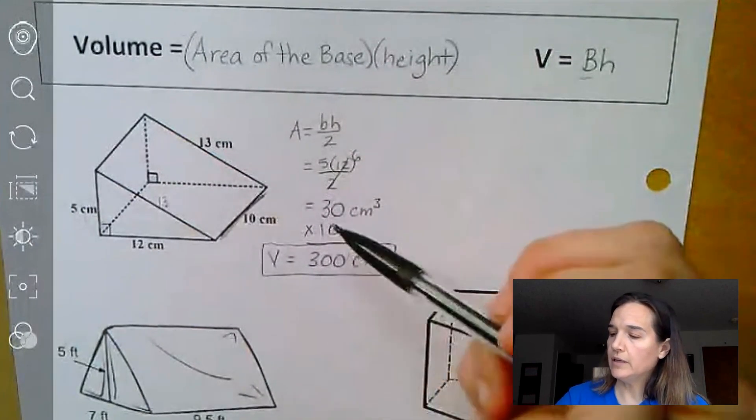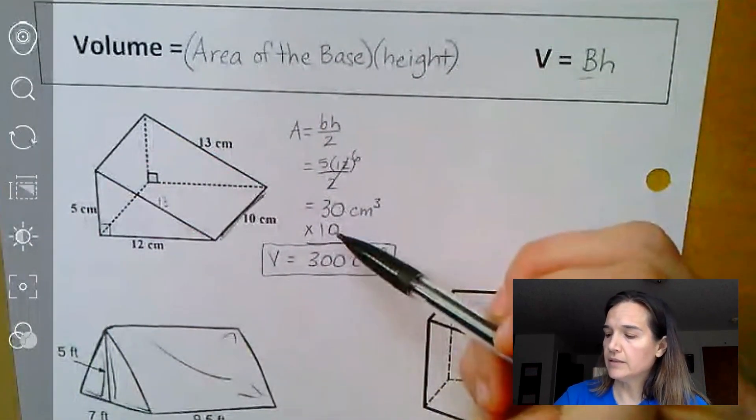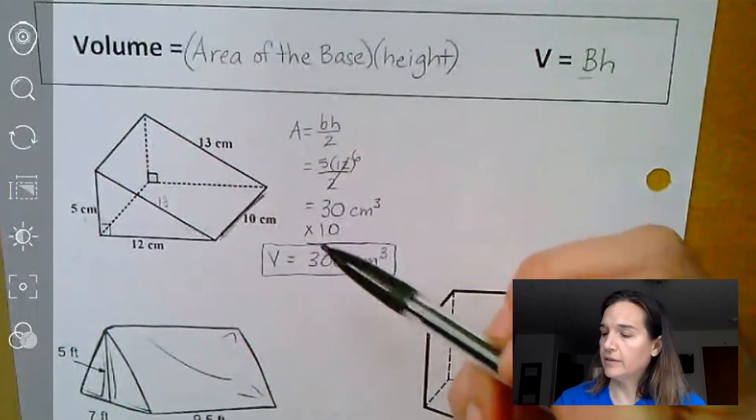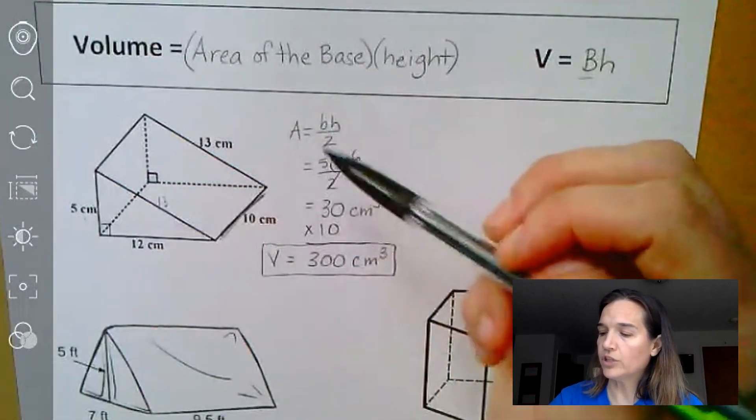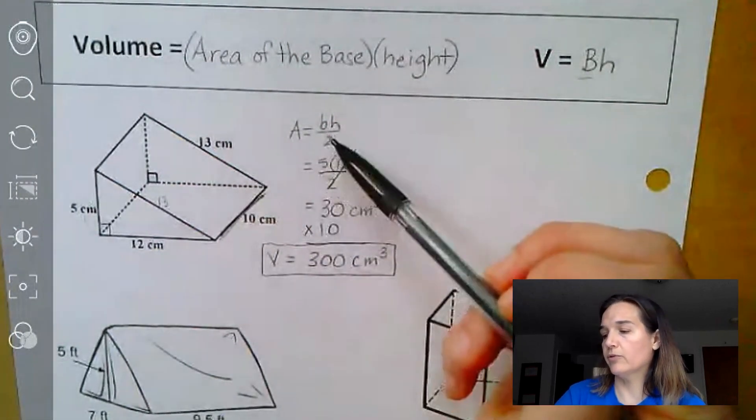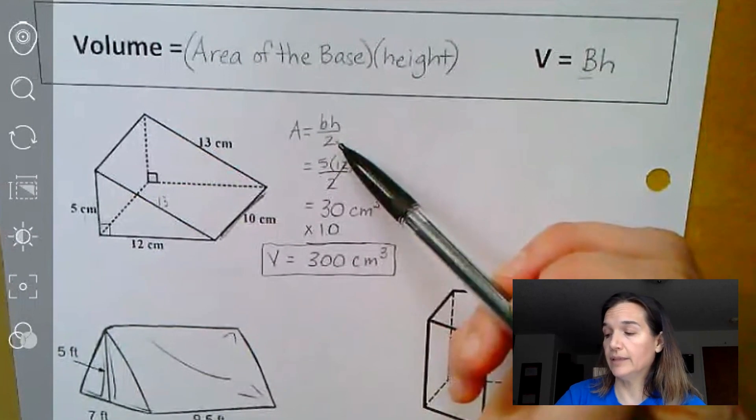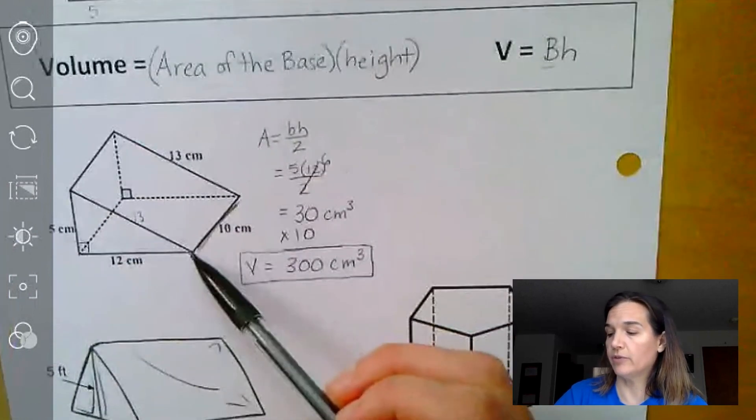And again, notice we did area of the base times the height, but the area of the base depended on what shape it was. So we used the formula for area of a triangle because that was our shape of our base.